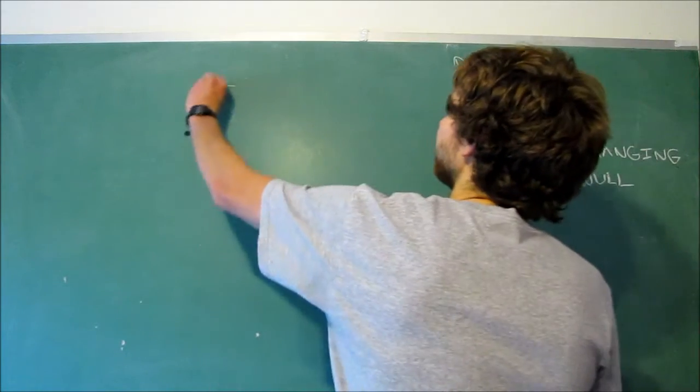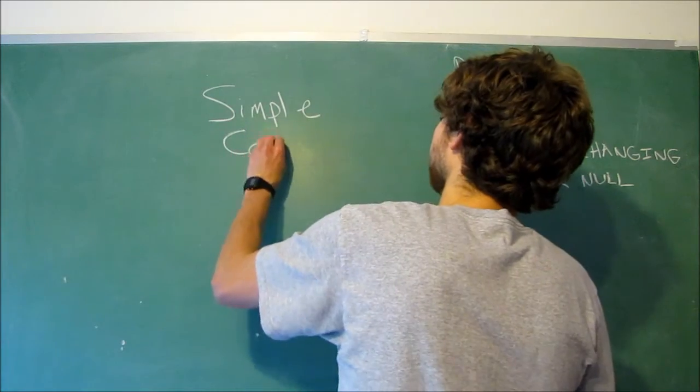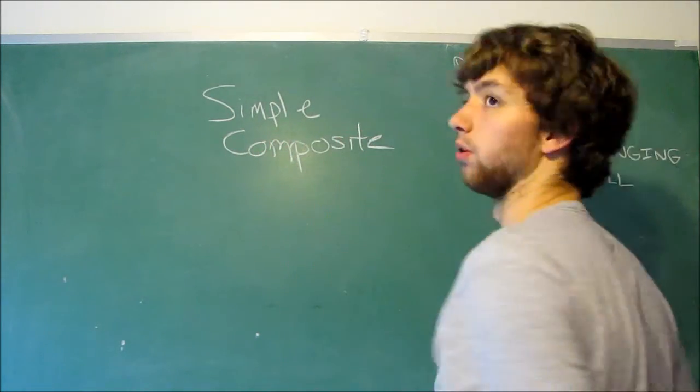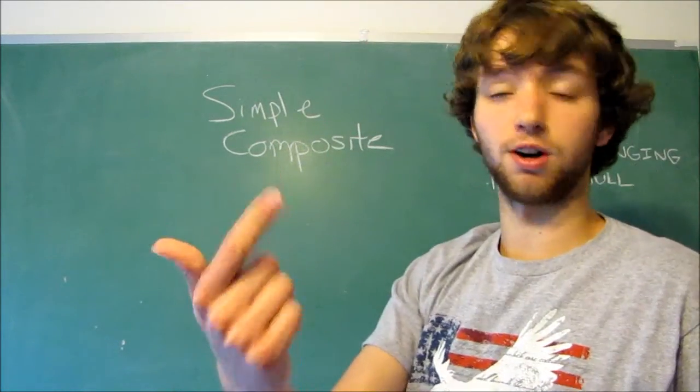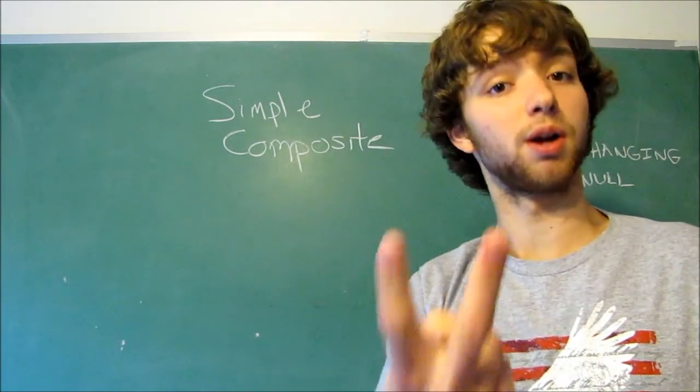Alright, simple and composite. Okay, so simple means that the key consists of one column. Composite means it consists of two or more columns.